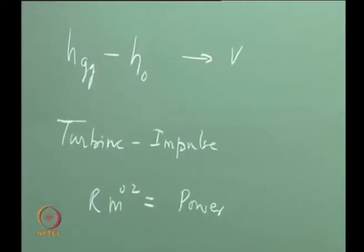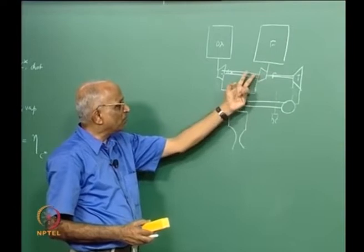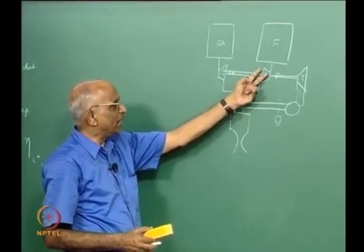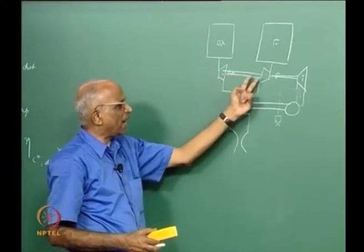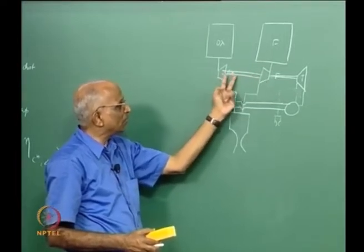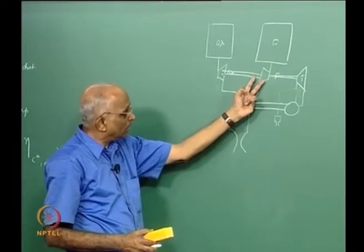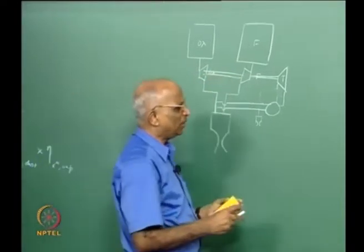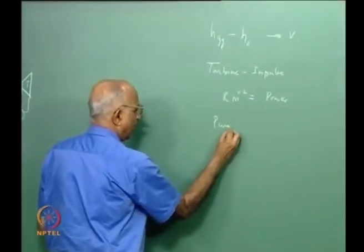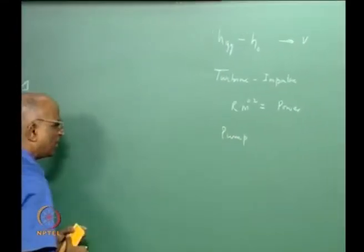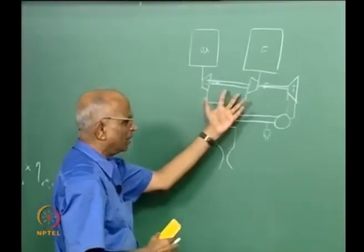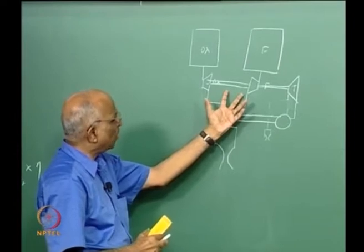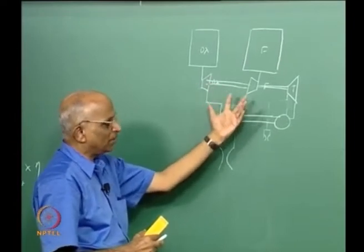The pumps: for a small engine, a centrifugal pump handles small flow at high pressure. Larger systems may use axial flow pumps or combinations of centrifugal, radial, and axial types. Going into pump details becomes an exercise in turbomachinery, but we want to do justice to pumps and turbines.